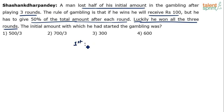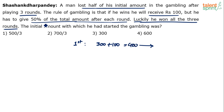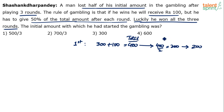He started with 300 rupees. After the first round, he won, so he earns 100 rupees, making it 400. But he has to pay half of 400, so 200 is gone. He is left with 200 rupees. That 200 is what remains after the total of 400 is halved.